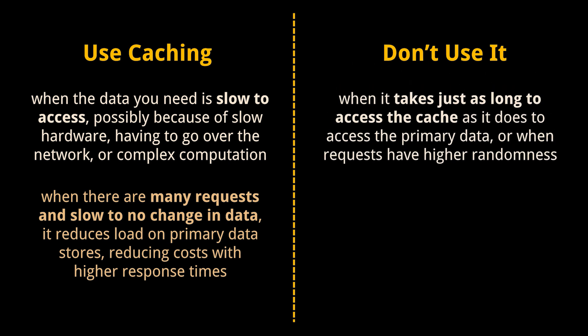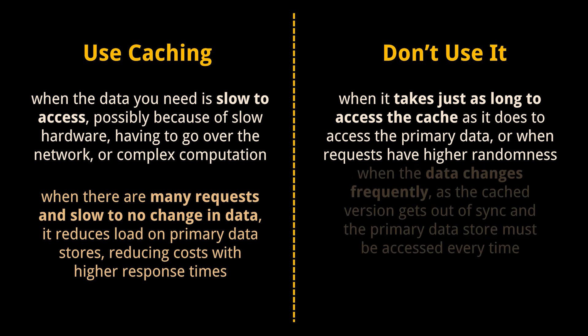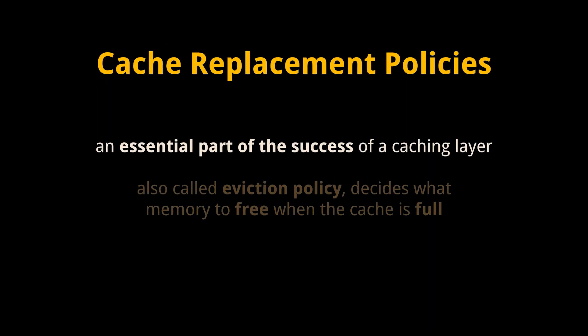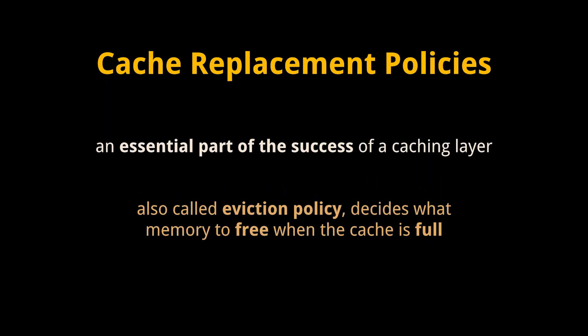On the other hand, caching isn't helpful when it takes just as long to access the cache as it does to access the primary data, or when requests have higher randomness, since caching performance comes from repeated memory access patterns. Also, caching isn't helpful when the data changes frequently, as the cached version gets out of sync and the primary data store must be accessed every time.